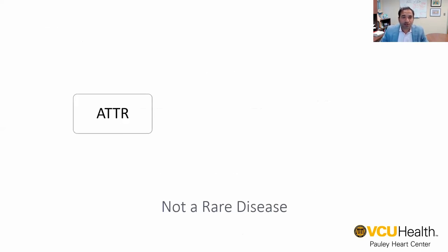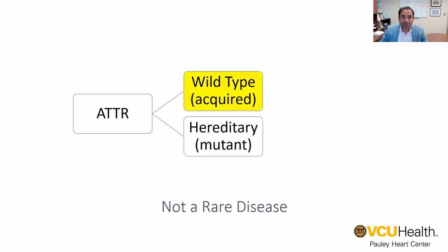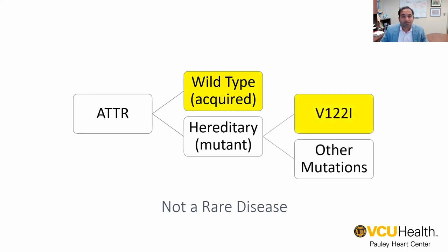Back to the general classifications of ATTR amyloidosis — it is not a rare disease, and there are two types. There's a hereditary type, and there's also an acquired type which develops with aging. It used to be called senile amyloidosis, but has been renamed wild type or unmutated TTR amyloidosis. Of the hereditary types, the V122I, also renamed the V142I mutation, is very common, especially in Black Americans.